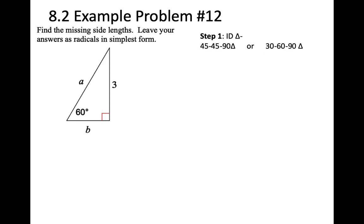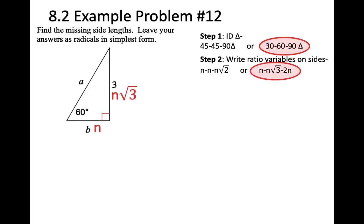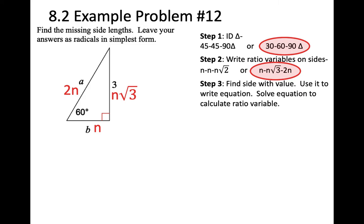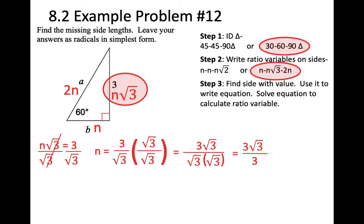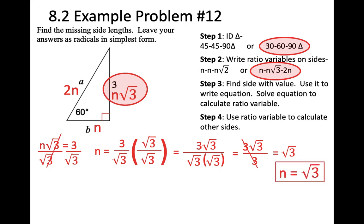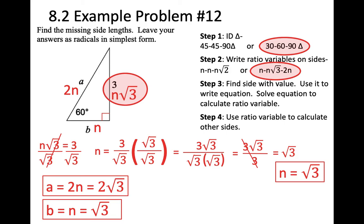Problem 12: it's a 30-60-90 with ratios N, N root 3, 2N. The side with a value gives N root 3 equals 3. Divide both sides by root 3, so N equals 3 over root 3. Multiply by root 3 over root 3 to rationalize — numerator is 3 root 3, denominator is root 3 times root 3 equals 3, the 3s cancel, so N equals root 3. A equals 2N, which is 2 root 3. B equals N, which is root 3.